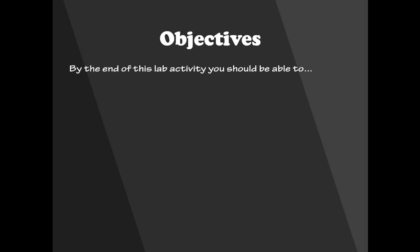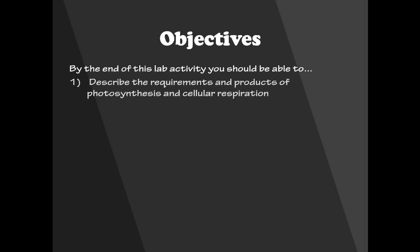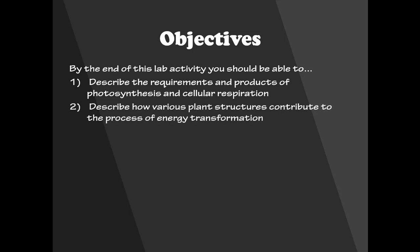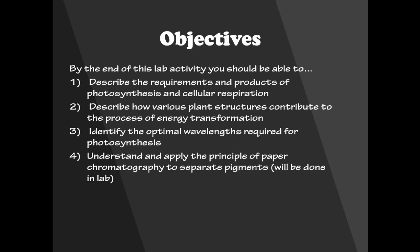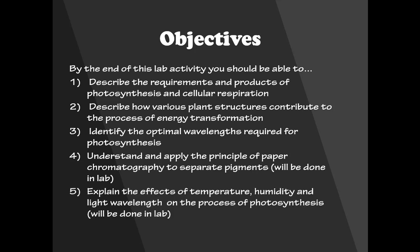Objectives: By the end of this lab activity, you should be able to describe the requirements and products of photosynthesis and cellular respiration, describe how various plant structures contribute to the process of energy transformation, identify the optimal wavelengths required for photosynthesis, understand and apply the principle of paper chromatography to separate pigments, and explain the effects of temperature, humidity, and light wavelength on the process of photosynthesis.